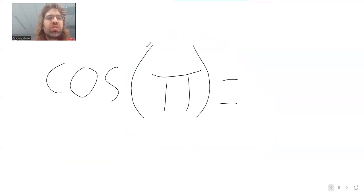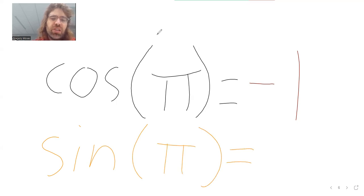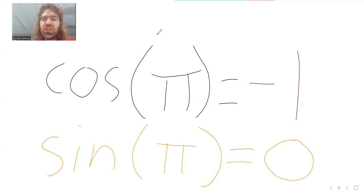So the cosine of pi is the x-coordinate. The cosine of pi is negative one. And the sine of pi is the y-coordinate. The sine of pi is zero.